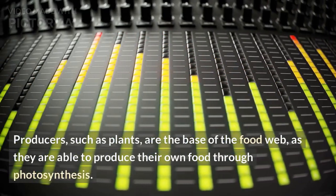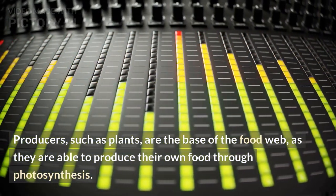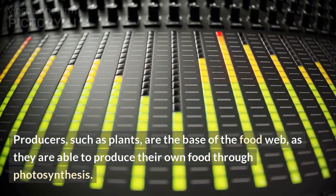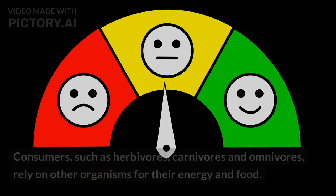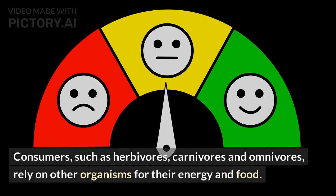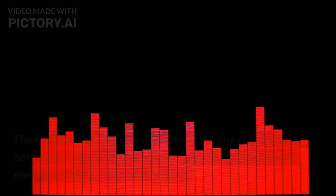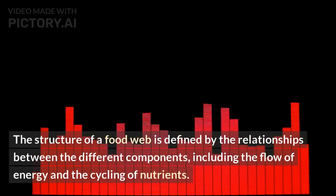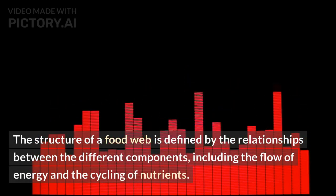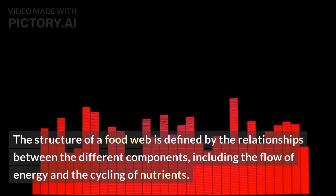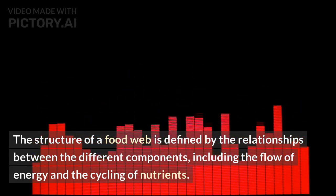Producers, such as plants, are the base of the food web, as they are able to produce their own food through photosynthesis. Consumers, such as herbivores, carnivores, and omnivores, rely on other organisms for their energy and food. The structure of a food web is defined by the relationships between the different components, including the flow of energy and the cycling of nutrients.